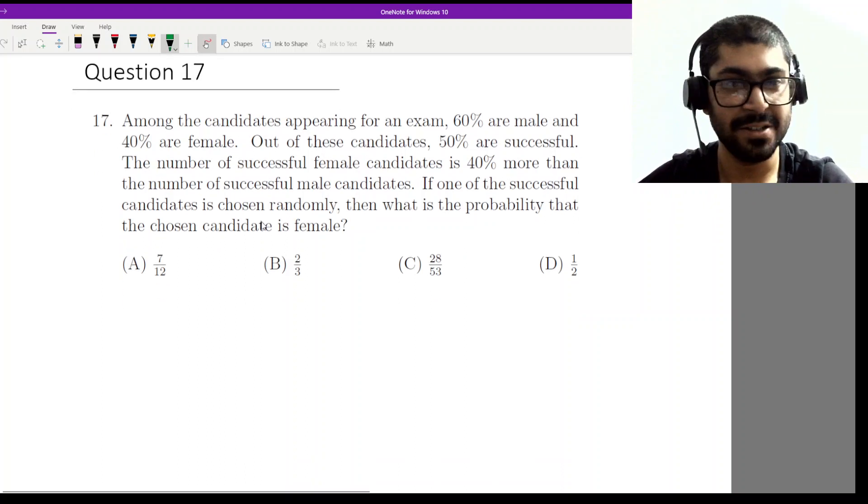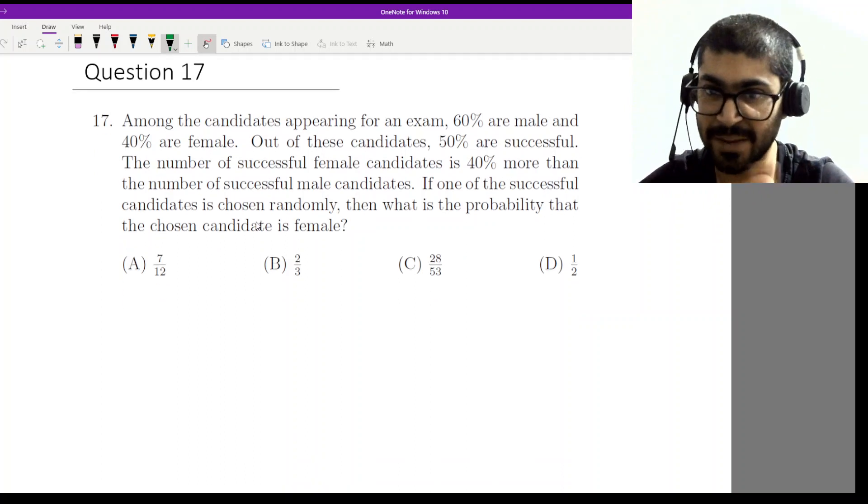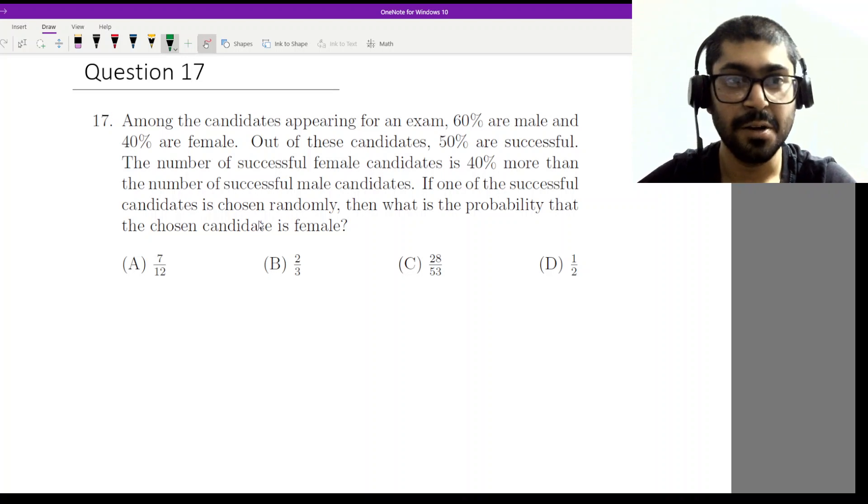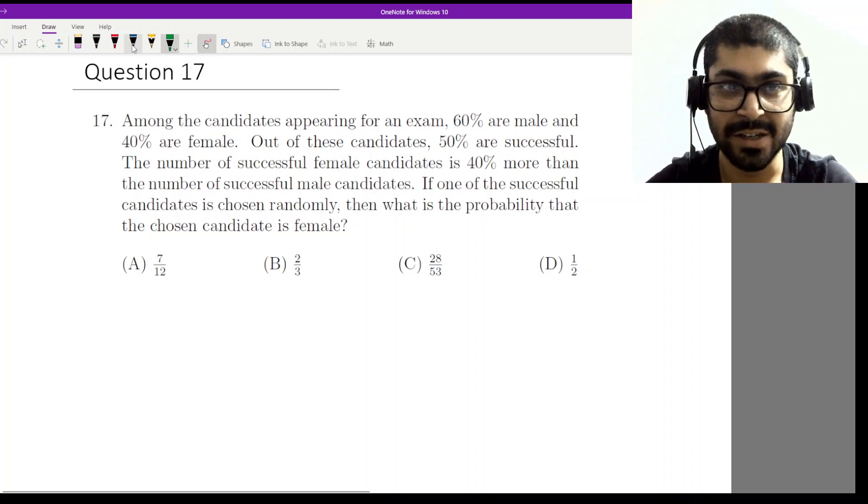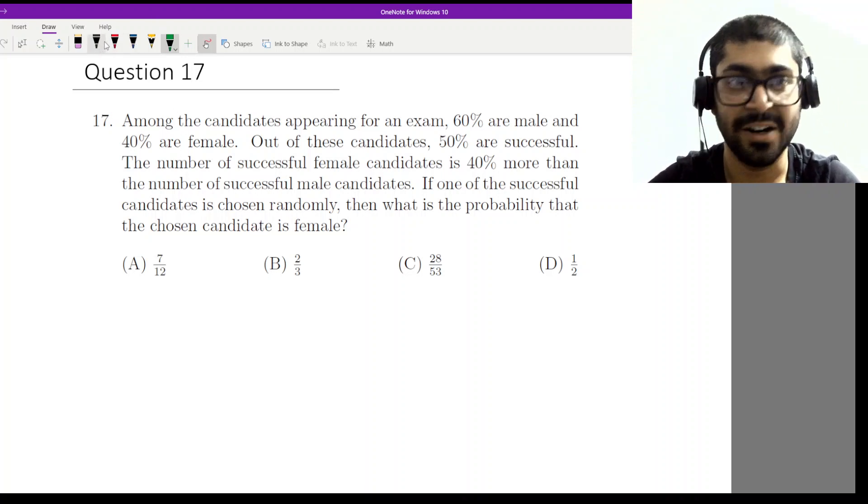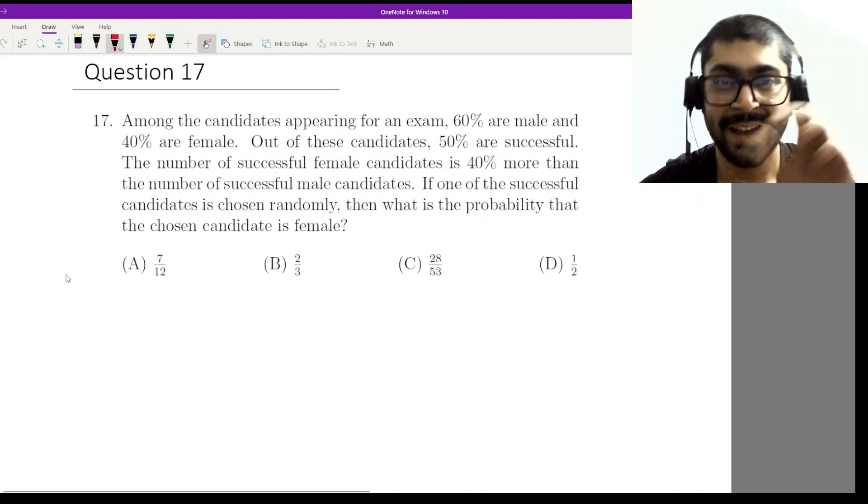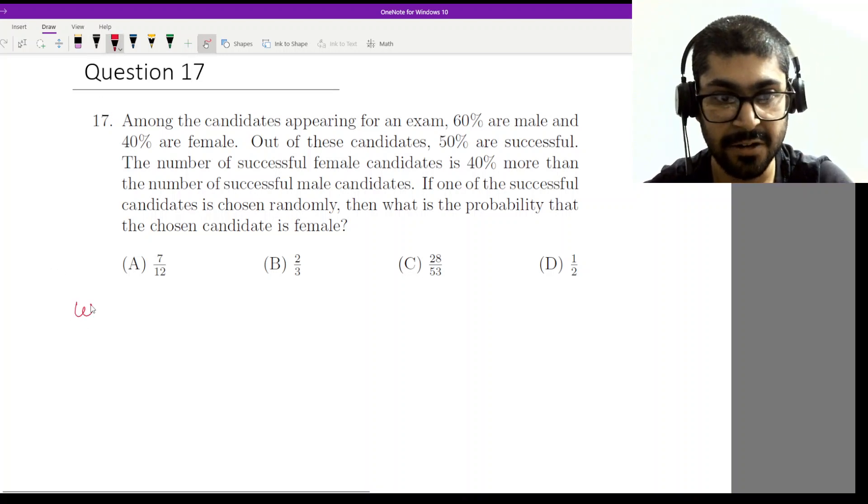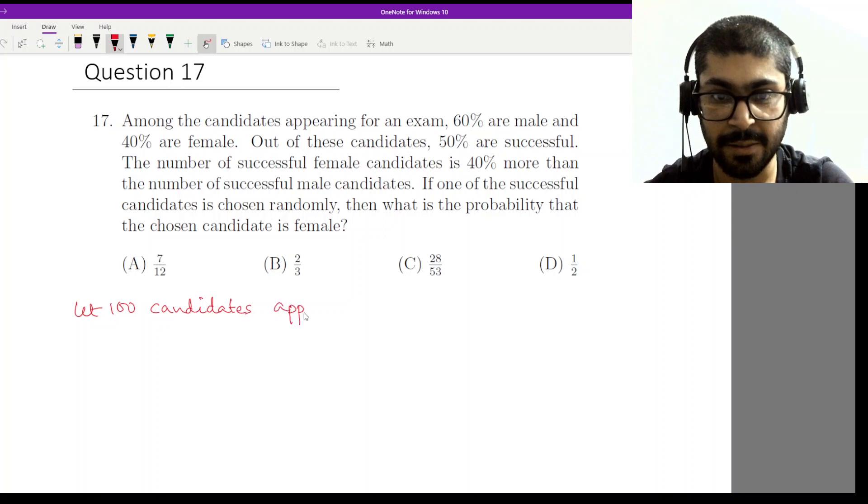Let's see how we resolve this. Among the candidates appearing for an exam, 60 percent are male and 40 percent female. Whenever these types of percentages are there, please make sure that you are using the base calculation as 100. That will make all of the cancellations easier. So let 100 candidates appear for exam.